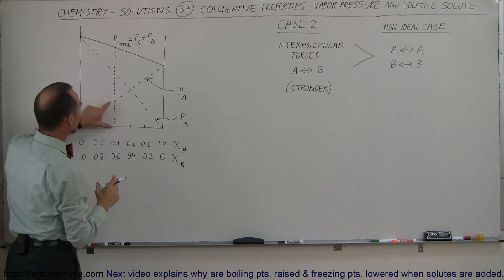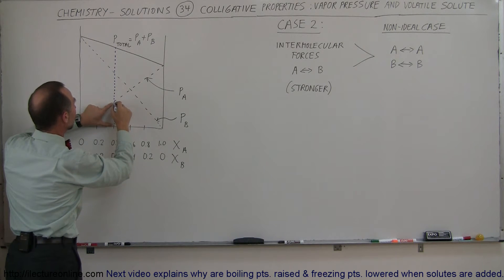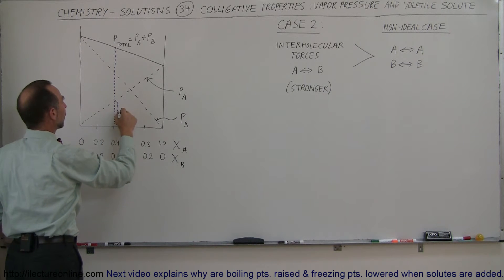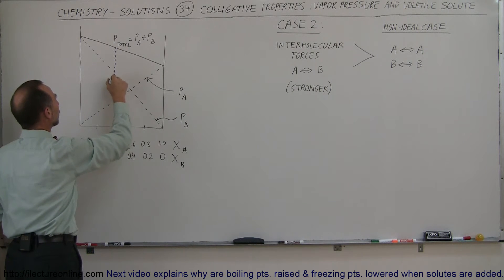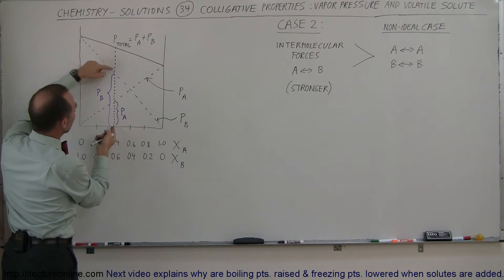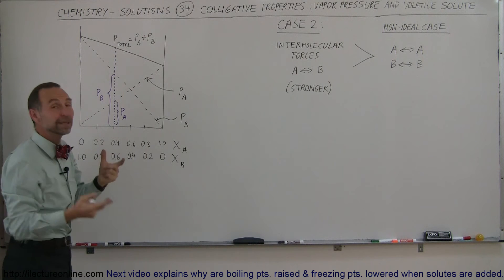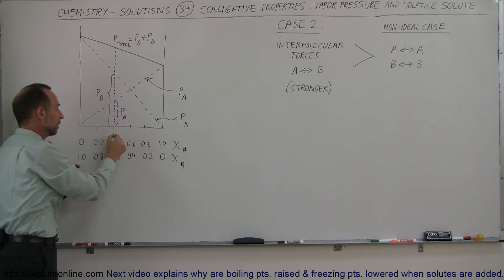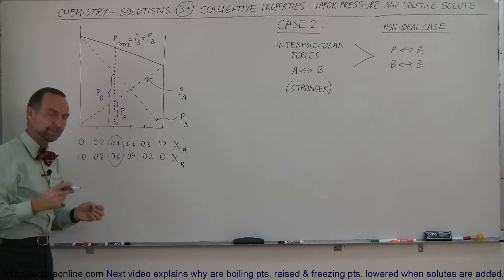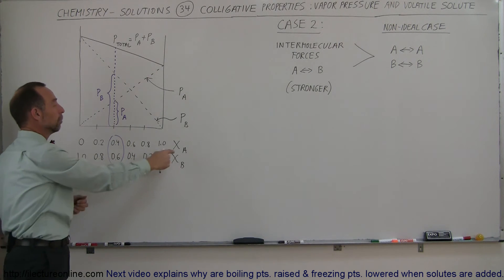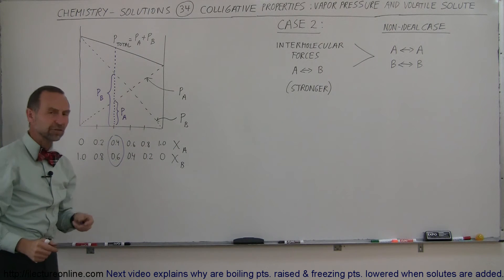You can then say that this represents the pressure from component A, so this is the vapor pressure contributed by component A, and then this here would be the vapor pressure due to component B. And then the total pressure would simply be the sum of those two, and that would be the ideal case. So this would be the total vapor pressure with this kind of ratio of the molar fraction of A and the molar fraction of B.